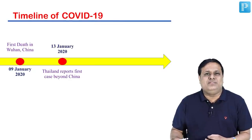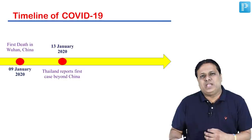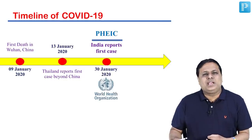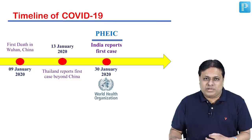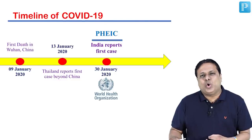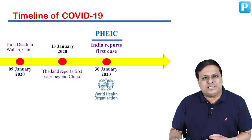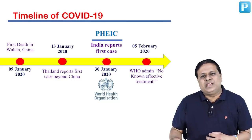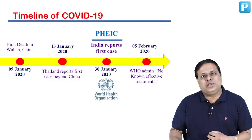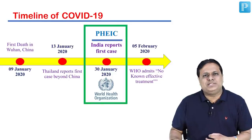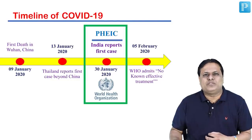On 13th January 2020, cases beyond China were reported, first from Thailand. India reported its first case on 30th January 2020. This is also the same date on which WHO declared this disease as PHEIC — Public Health Emergency of International Concern. Take-home point: India's first case and the PHEIC declaration both occurred on the same day, 30th January 2020.